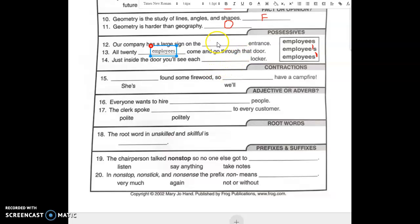Just inside the door you'll see each employee's locker. This is a clue. Each means one. So that means I have to use employee apostrophe S. That must mean the first one is employees. Then the apostrophe.